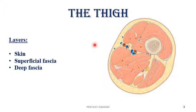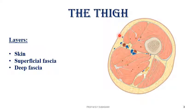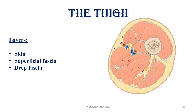That is the cross-section in the thigh, showing the layers starting from the skin, superficial fascia, deep fascia, and then the muscles and the nerves deep to the deep fascia.